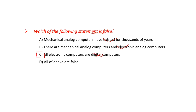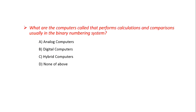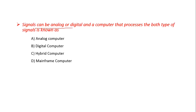Friends, always read questions very carefully. What are the computers called that perform calculations and comparisons usually in the Binary Numbering System? We discussed that Digital Computers work in the Binary Numbering System. Option A: Analog, B: Digital, C: Hybrid, D: None of the above. The correct answer is B: Digital.